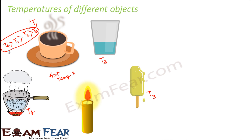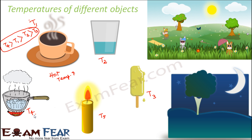A burning candle flame is extremely hot — even hotter than boiling water. If its temperature is T5, then T5 is greater than T4. Similarly, comparing day and night temperatures: if Tn is night temperature and Td is day temperature, then Td is greater than Tn, which is why nights are cooler than days. Knowing temperature helps us measure the hotness or coldness of objects.